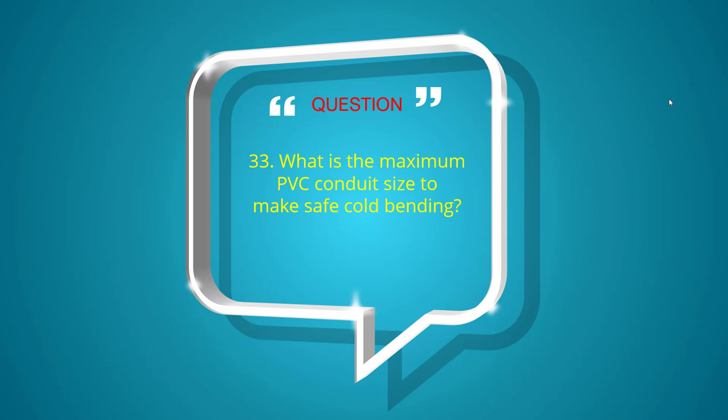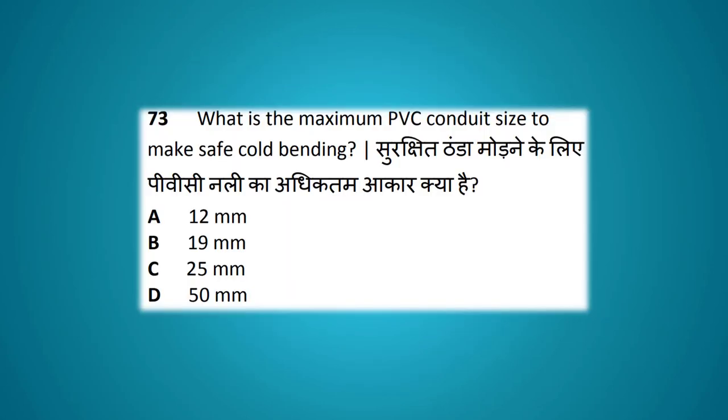What is the maximum PVC conduit size to make a safe cold bending? Options: 12 mm, 19 mm, 25 mm, 50 mm. The answer is 25 mm.